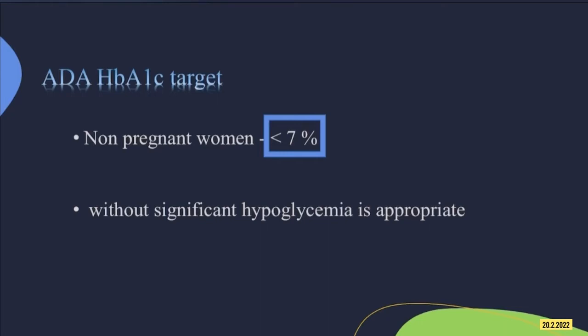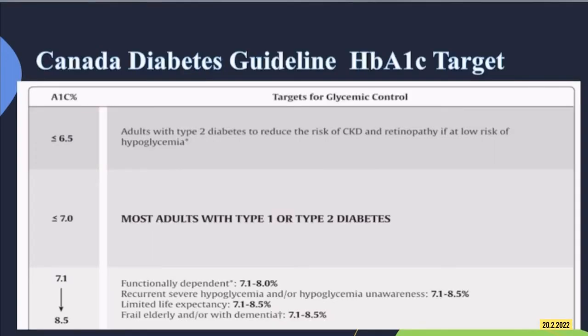HbA1c target depends on the individual patient. The ADA recommends an HbA1c target of less than 7% in non-pregnant adults, without significant hypoglycemia. An HbA1c target of less than or equal to 6.5% to reduce the risk of CKD and retinopathy is recommended by the Canadian Diabetes Guidelines.